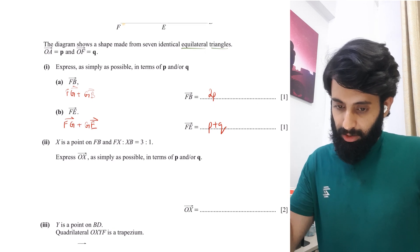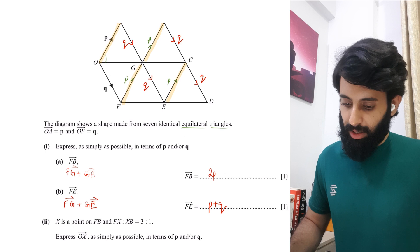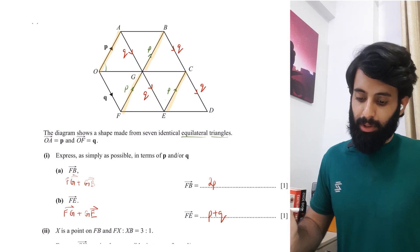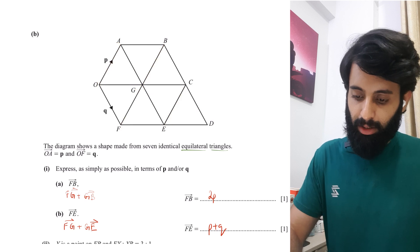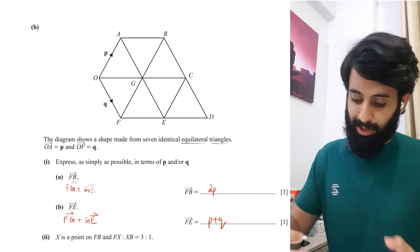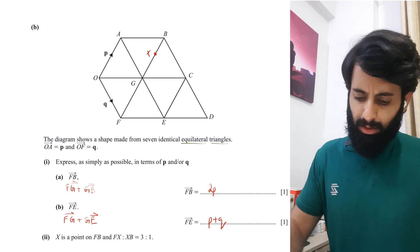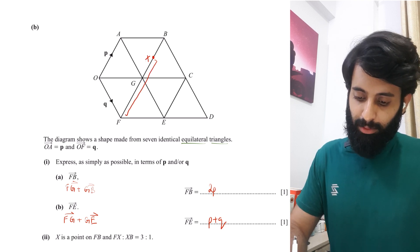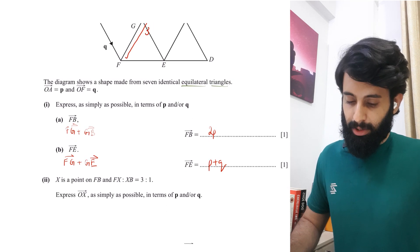Part 2 says X is a point on FB, and FX to XB is in the ratio 3 to 1. Express OX as simply as possible in terms of P and/or Q. We know X is on FB with FX to XB in ratio 3 to 1, meaning this point has to be closer to B than to F — somewhere along that line. So FX is 3 parts and XB is 1 part.